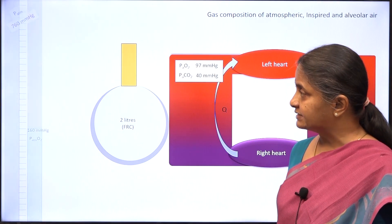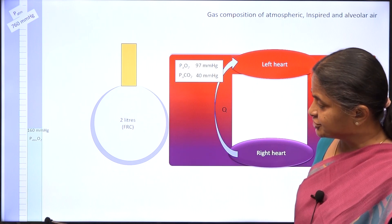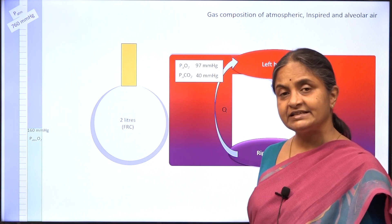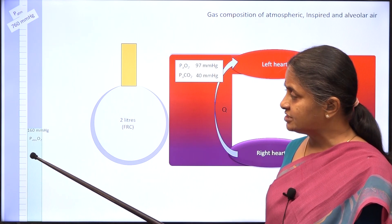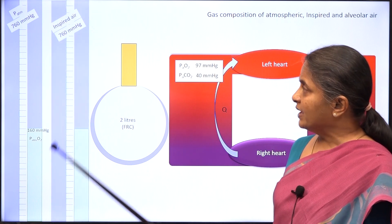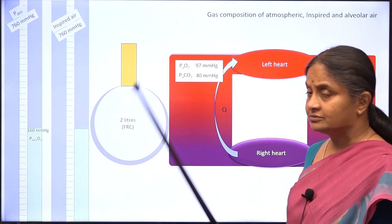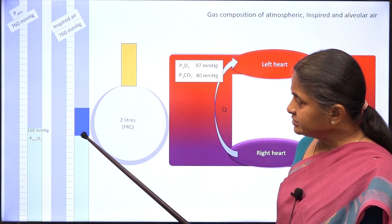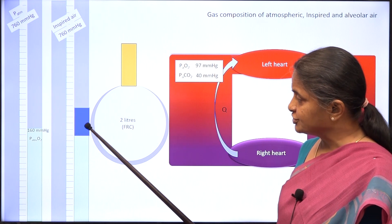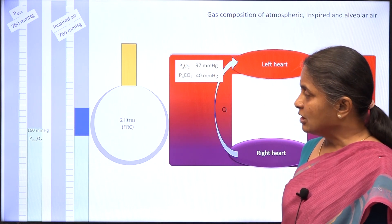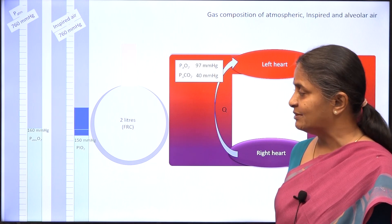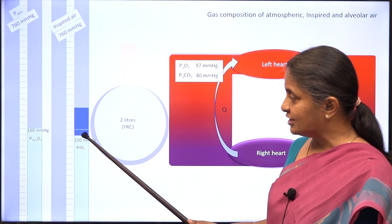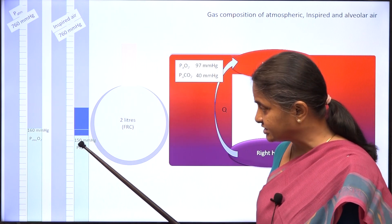Let us start by looking at gas composition of atmospheric air. The total atmospheric pressure at sea level is 760 mmHg, of which 160 mmHg is due to oxygen, with the rest being nitrogen. When air is inspired through the trachea and bronchi, water vapor is added. Water vapor occupies some oxygen space and some nitrogen space; oxygen partial pressure therefore reduces to 150 mmHg. Water vapor pressure at saturation is 47 mmHg, of which 10 mmHg occupies the oxygen space, reducing it from 160 to 150.